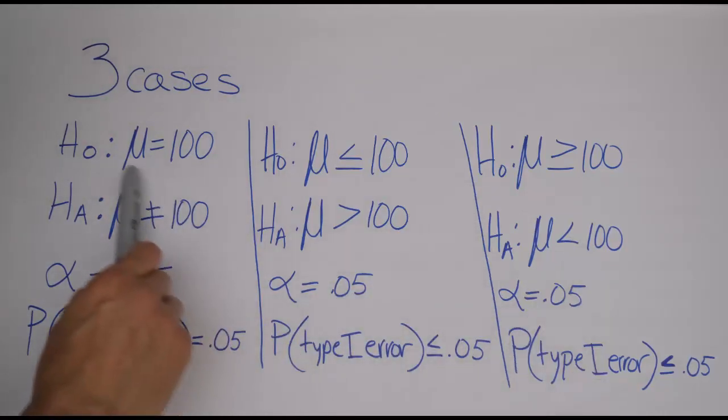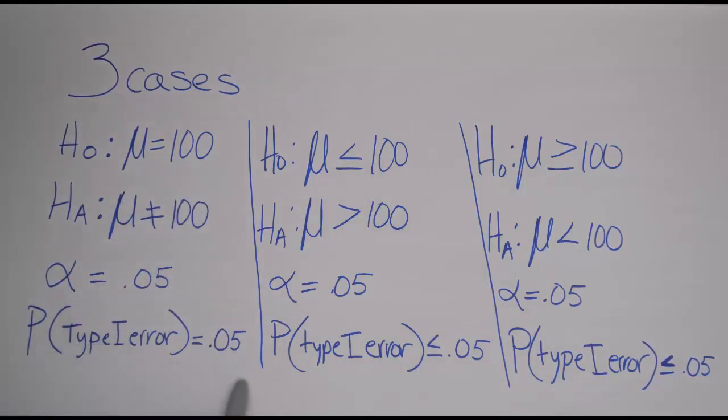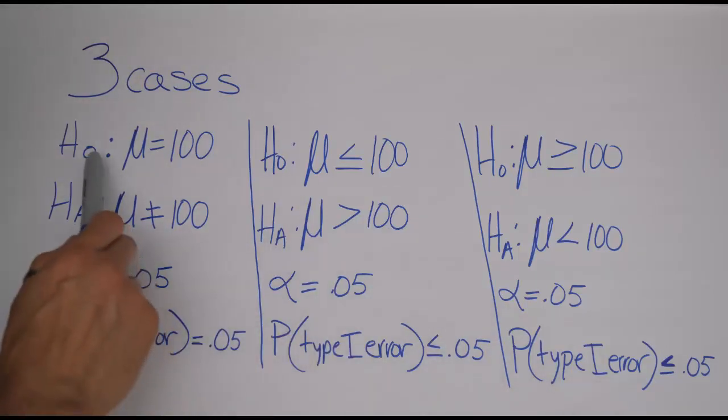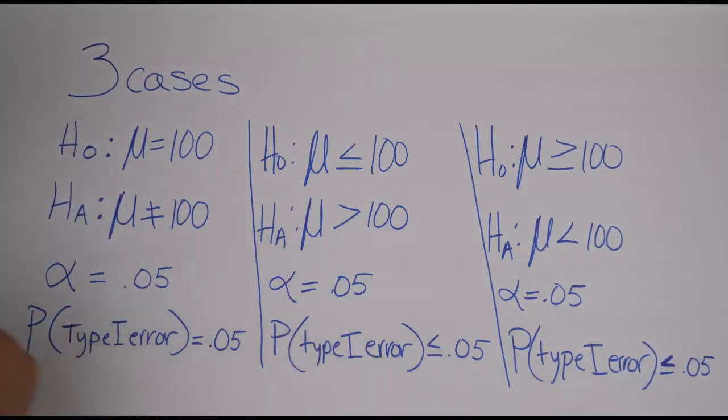So again, only in this special case where the null says the mean is equal to 100 do you have this probability of a type 1 error. And again, in the other cases, it's a maximum of that alpha. That's an important thing to remember, especially if your teacher is going to ask you about it. I ask my students about both of these cases, and they need to be prepared to answer correctly the probability of a type 1 error, depending on which H₀ and Hₐ pairing they're working with.